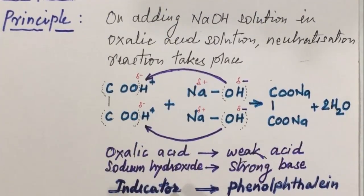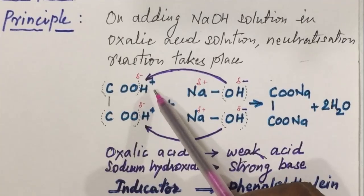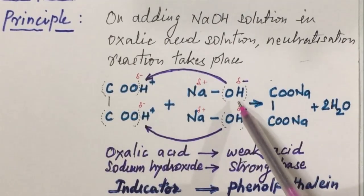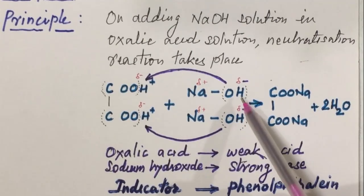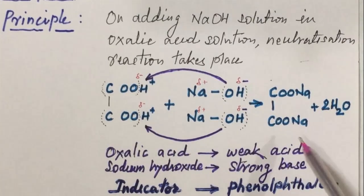The principle of the titration is: on adding NaOH solution to oxalic acid solution, immediately neutralization reaction takes place. Here COOH-COOH is the chemical formula of oxalic acid and Na-OH is the chemical formula of sodium hydroxide. Due to polarization effect, COO of oxalic group acquires partial negative charge and H atom of oxalic group acquires partial positive charge. On the other hand, Na of NaOH acquires partial positive charge and OH acquires slightly negative charge. When OH- of NaOH and H+ of oxalic group react, then water molecule eliminates and sodium oxalate is formed as the main product.